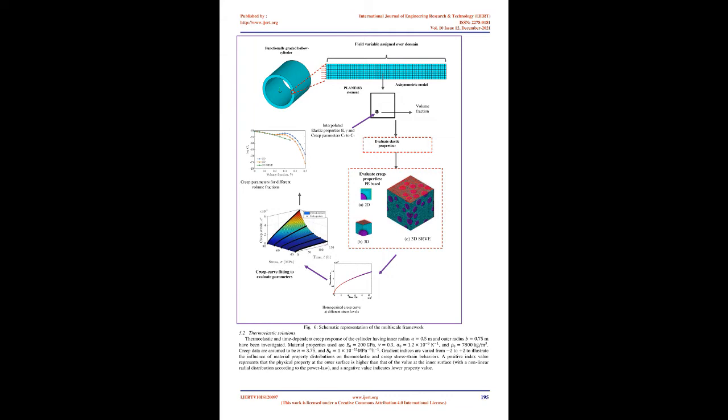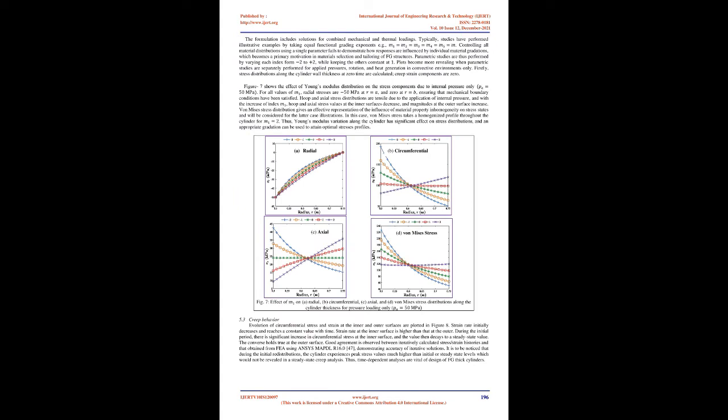Considering radial symmetry, an axisymmetric domain of the hollow cylinder is modeled in ANSYS MAPDL to reduce computational costs. The cylinder has inner and outer radii, and is exposed to an internal pressure, external pressure, angular speed, and a heat flux at the outer wall. The inner wall is held at a reference temperature of zero. The thermoelastic problem is first decoupled, and the thermal portion solved to input the temperature solution into the mechanical problem. The user programmable feature (user subroutine) is used to implement the functional gradation, done by defining a field variable — local volume fraction of constituent 2 — at several design points in the radial direction.